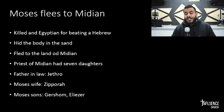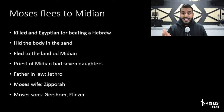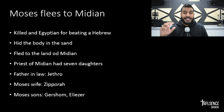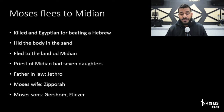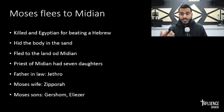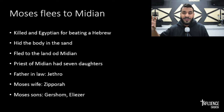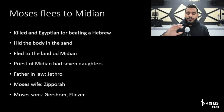In chapter two, Moses sees an Egyptian beating a Hebrew slave, and out of compassion and a heart to protect his Hebrew brother, Moses steps in and kills the Egyptian, hiding the body in the sand. He soon realizes that the Israelite slaves start spreading word about what he had done, and understands that Pharaoh is going to find out. The word gets back to Pharaoh that Moses killed an Egyptian, so Moses fled to the land of Midian.